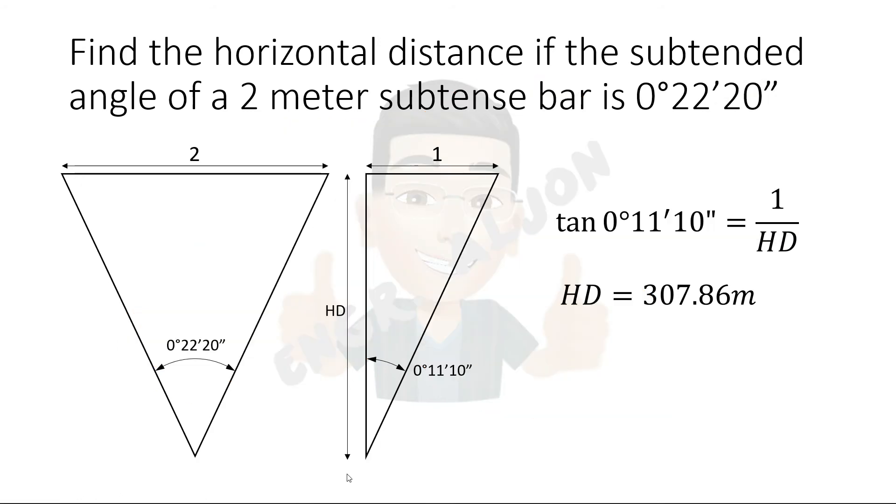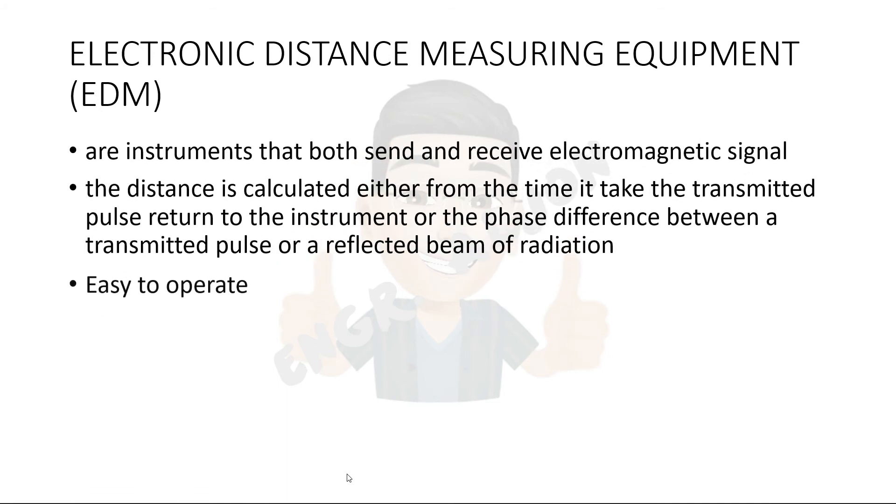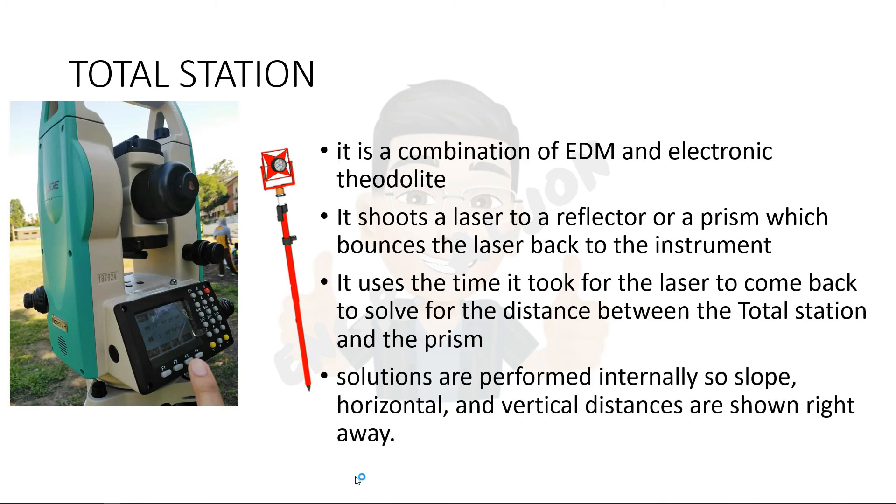Next, we have the electronic distance measuring equipment. These are instruments that both send and receive electromagnetic signals. The distance is calculated either from the time it takes the transmitted pulse to return to the instrument, or the phase difference between a transmitted pulse or a reflected beam of radiation. The advantages of EDM include faster and more accurate surveys, and it is easy to operate. A total station is a common instrument used in surveying these days. It is a combination of an electronic theodolite and EDM.